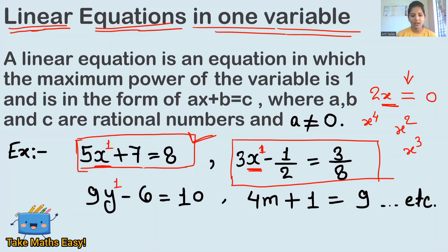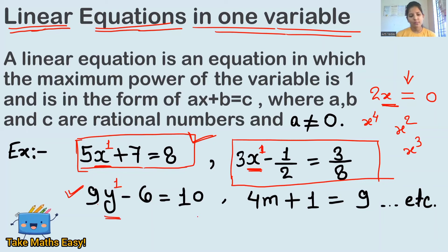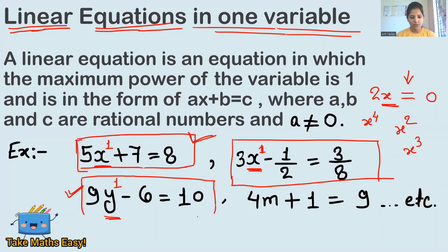The third example: 9y minus 6 equals to 10 — this is also an example of a linear equation in one variable. Here y is used as the variable. You might ask why y and not x — y can be used, but only y should be used in this equation. In one equation, only one variable can be used.